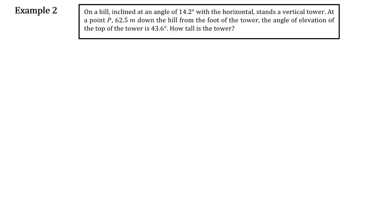This is our second example on the Sine Law — a word problem. We have a hill inclined at an angle of 14.2 degrees with the horizontal. A vertical tower stands on the hill, and at a point C, 62.5 meters down the hill from the foot of the tower, the angle of elevation of the top of the tower is 43.6 degrees. How tall is the tower?